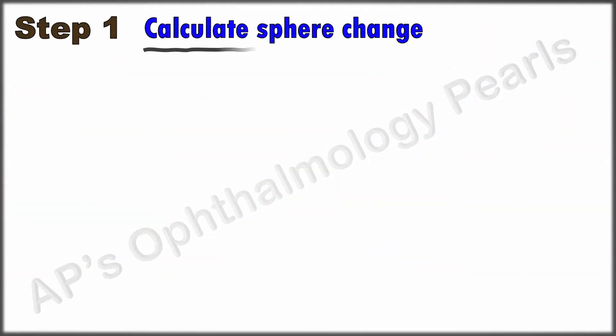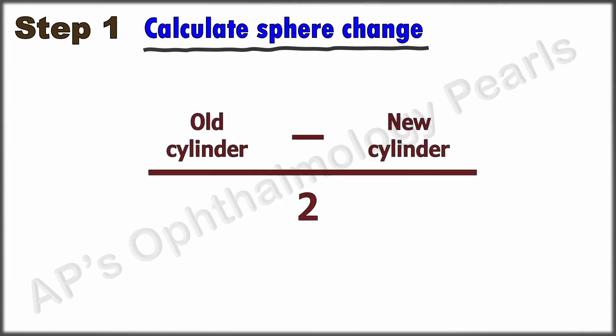Step 1: Calculate the amount of sphere that is to be changed. For that, the formula (old cylinder minus new cylinder) divided by 2 is used. Since these are algebraic operations, it is important to note the order of the values—that is, old cylinder minus new cylinder. If you reverse this order, you will have to change the sign and it gets confusing.